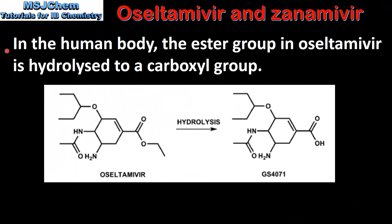In the human body, the ester group in Oseltamivir is hydrolyzed to a carboxyl group. In this diagram we can see that the ester group in Oseltamivir undergoes hydrolysis to form a carboxyl group.